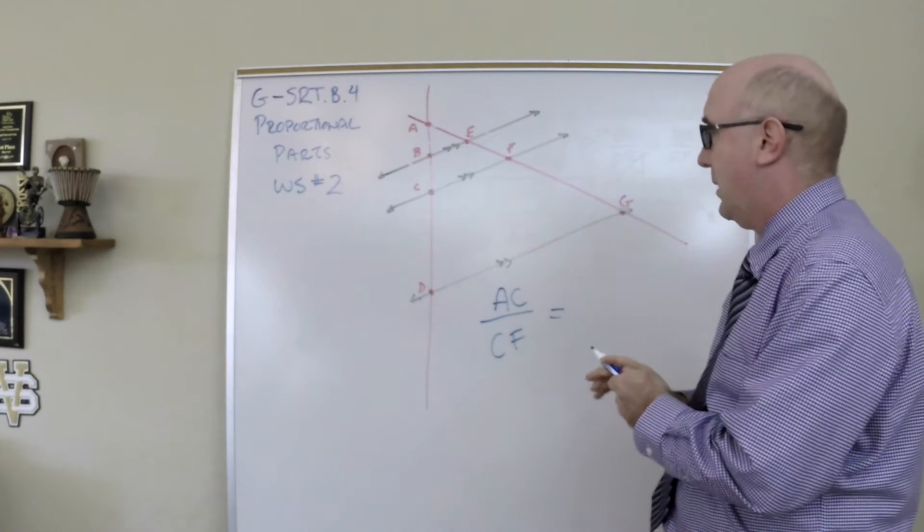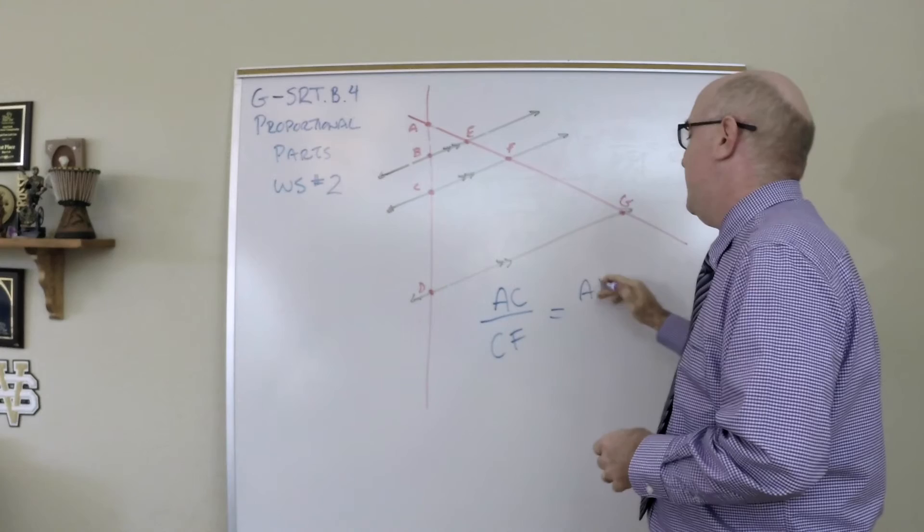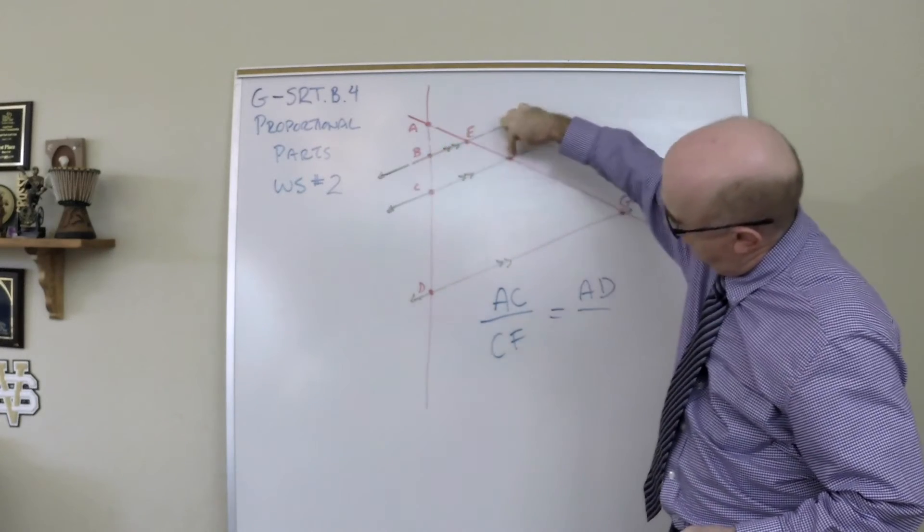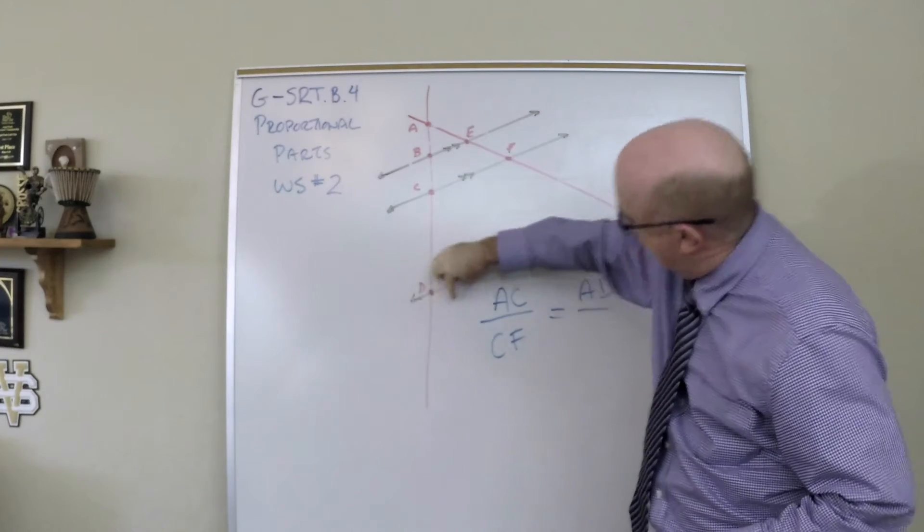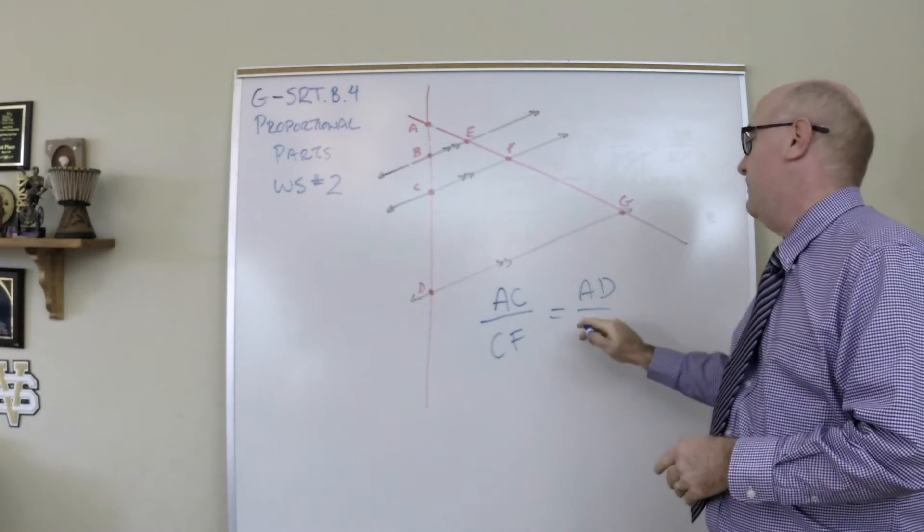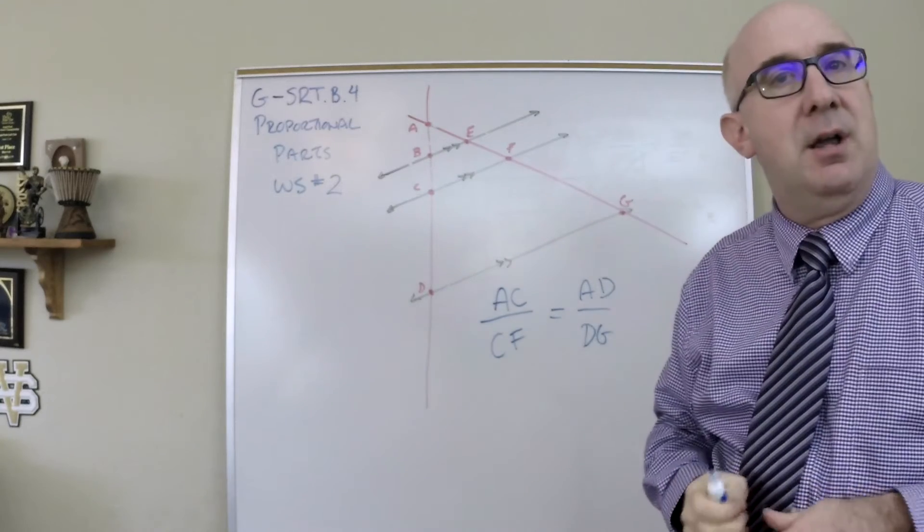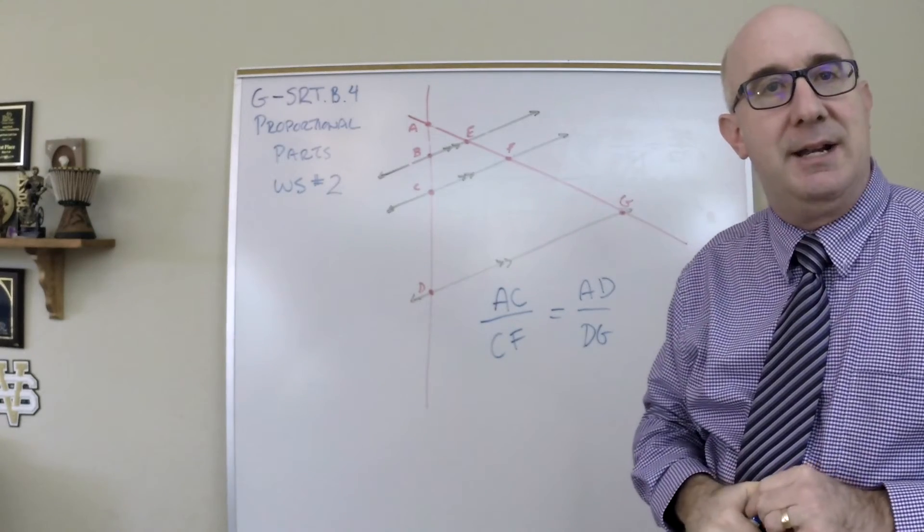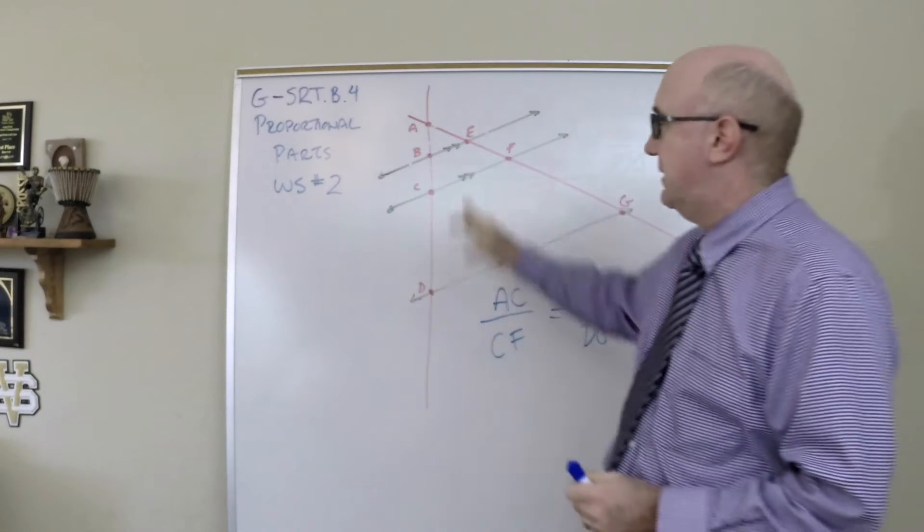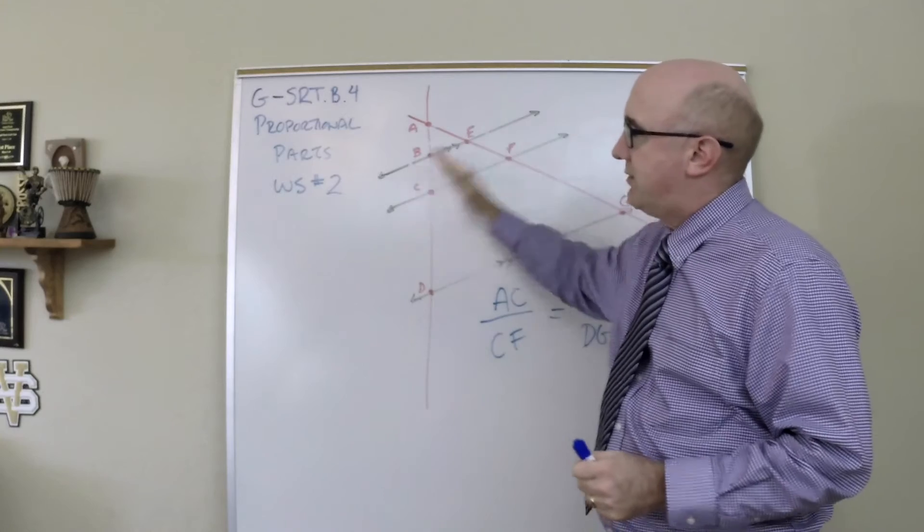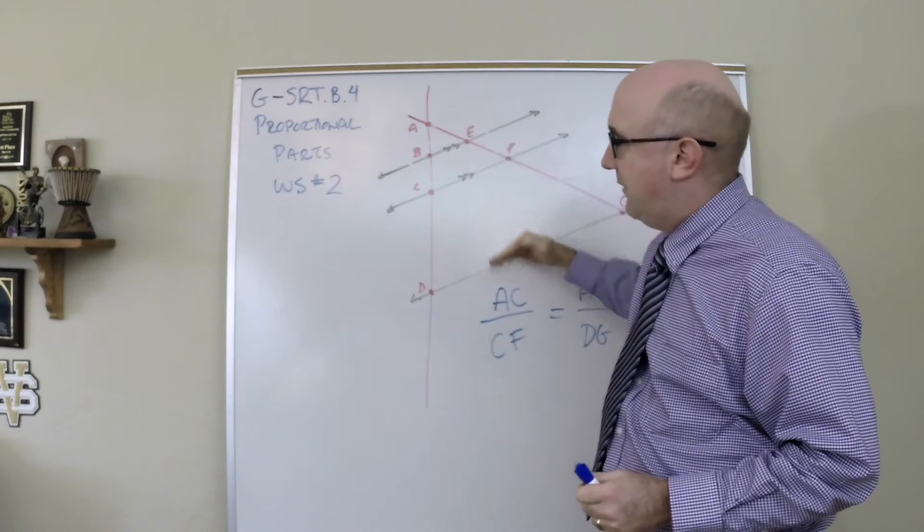Let's see if I can show you a relationship that makes sense. AC is this length, a full side of that triangle. CF is the full side of that triangle as AD is to DG, and many other relationships exist here. Just be careful and use wisdom because the side splitting pieces are proportional across from each other.